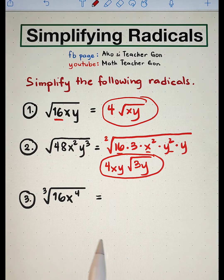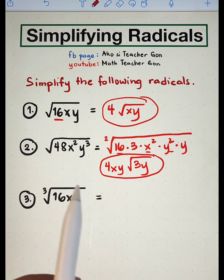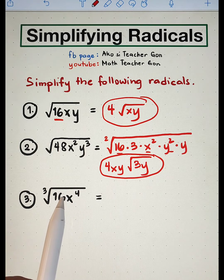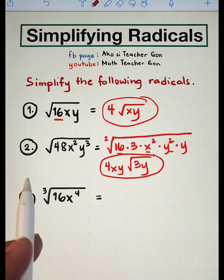Next, number 3. We are given the cube root of 16 x raised to the 4th power. 16 is a perfect square, therefore we cannot easily extract the cube root of 16. But there's a way to simplify.